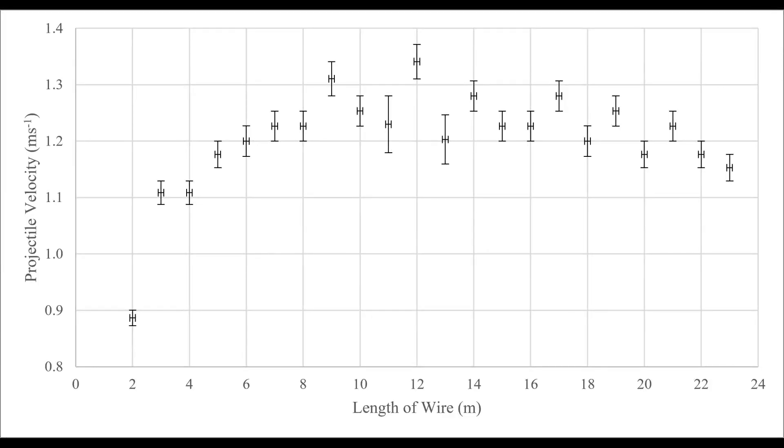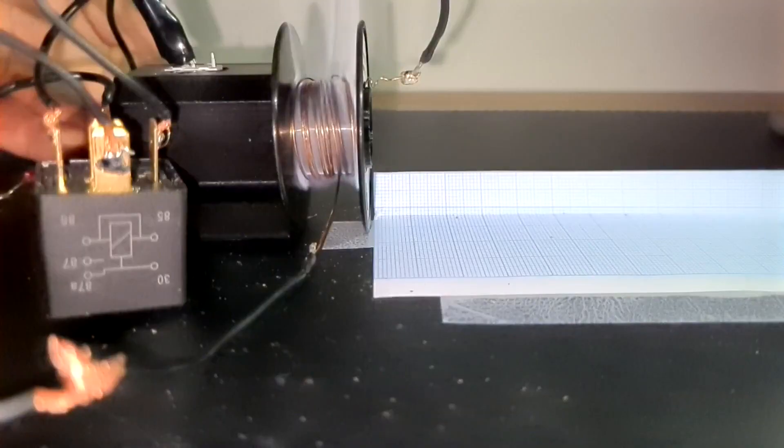Here you see the results of the first experiment, where you can see that the velocity of the projectile hovers around 1.2 to 1.3 the whole time, except for when the length of the wire gets very short, but that is because the current that went through the wire burnt it up.